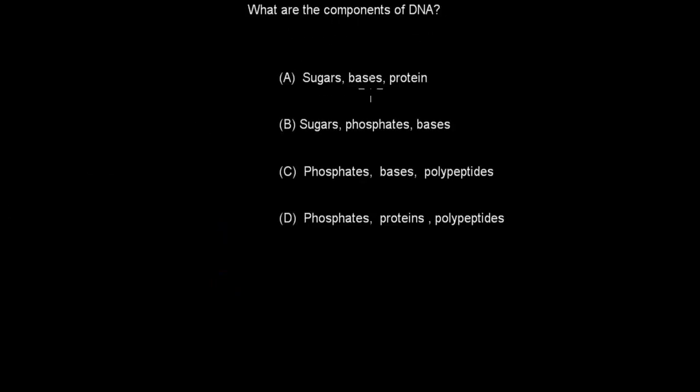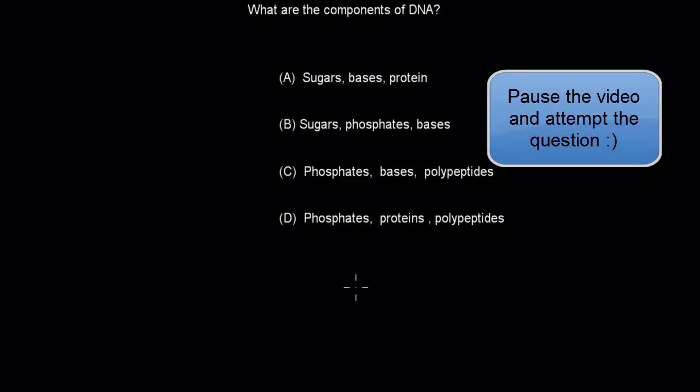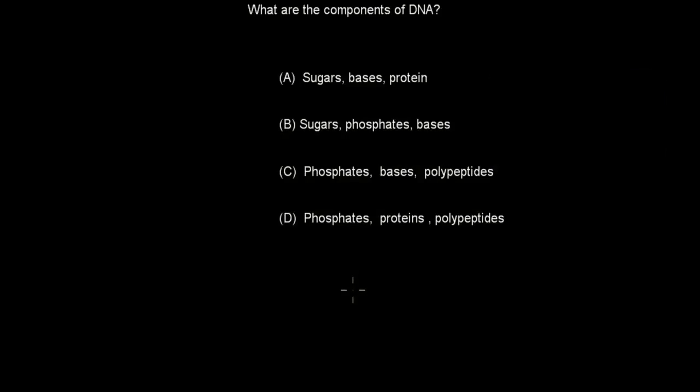What are the components of DNA? A, sugar, bases and proteins. B, sugar, phosphates and bases. C, phosphates, bases and polypeptides. D, phosphates, proteins and polypeptides. When you're ready, pause the video and attempt the question. Welcome back. In this case, the correct answer is we have sugar, phosphates and bases. B is correct. Proteins are made by DNA indirectly, so they aren't part of DNA. So A is false. C is false because polypeptides, again, these are made by our DNA, they aren't part of our DNA. And polypeptides and proteins are both made by DNA, not part of DNA. So B is the correct answer. I hope that was useful.